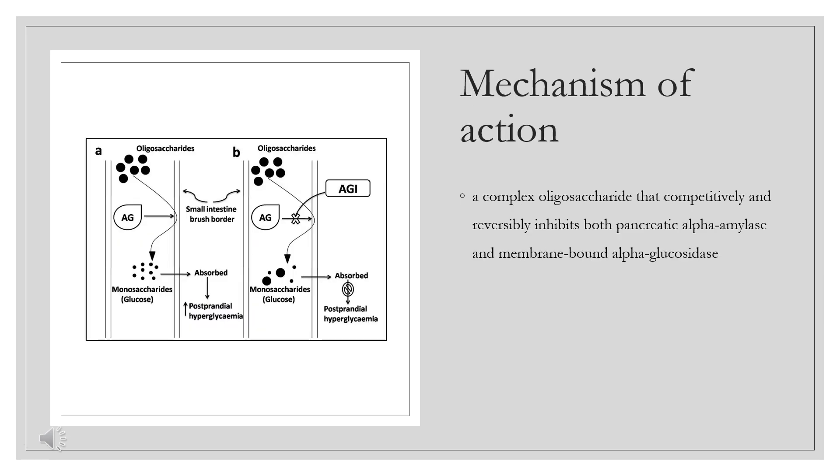In contrast to sulfonylureas, miglitol does not enhance insulin secretion. The anti-hyperglycemic action of miglitol results from a reversible inhibition of membrane-bound intestinal alpha-glucoside hydrolase enzymes. Membrane-bound intestinal alpha-glucosidases hydrolyze oligosaccharides and disaccharides to glucose and other monosaccharides in the brush border of the small intestine.